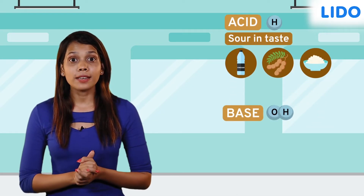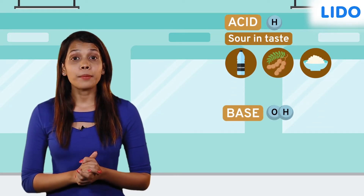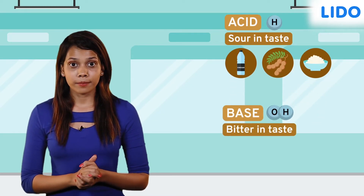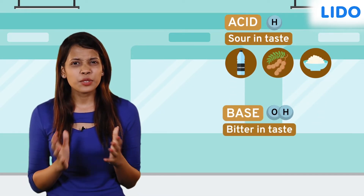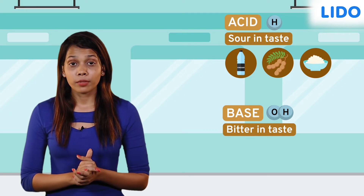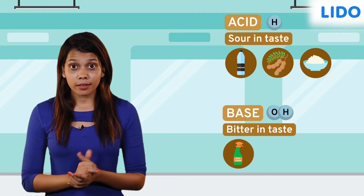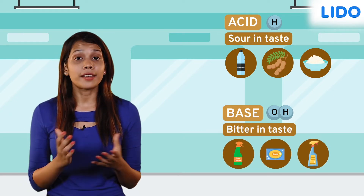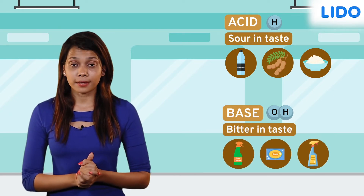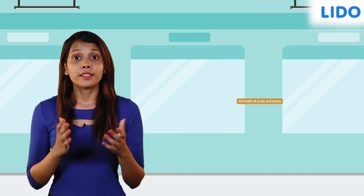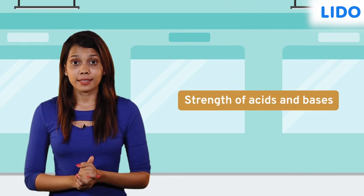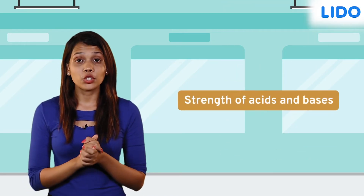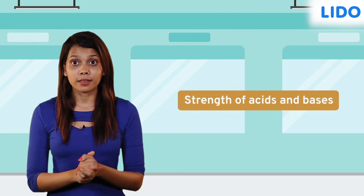Bases have a hydroxyl ion and are bitter to taste and have a soapy touch. Floor cleaners, soap, and detergents are examples of bases. The strength of an acid or base is shown by a factor called pH.